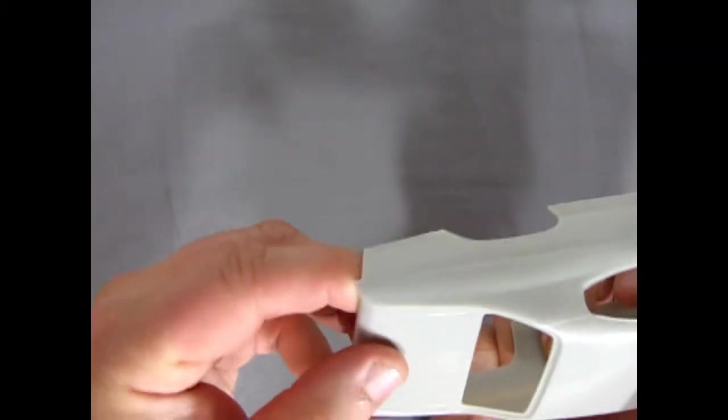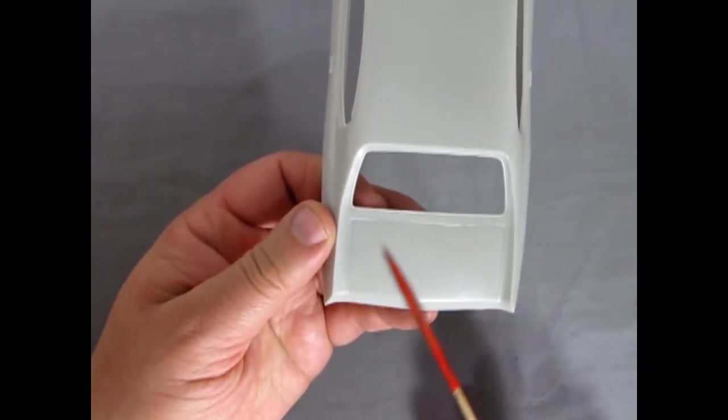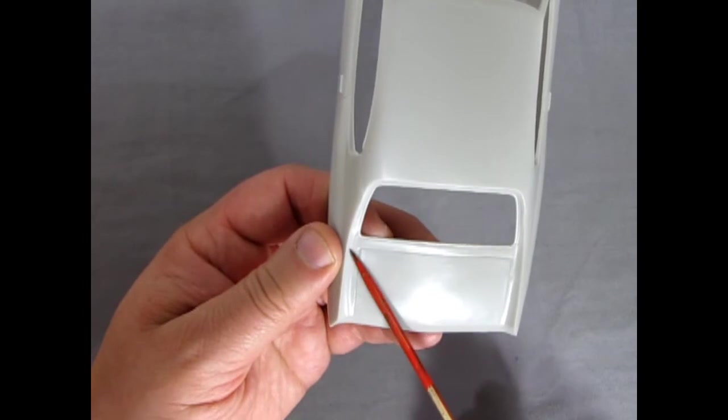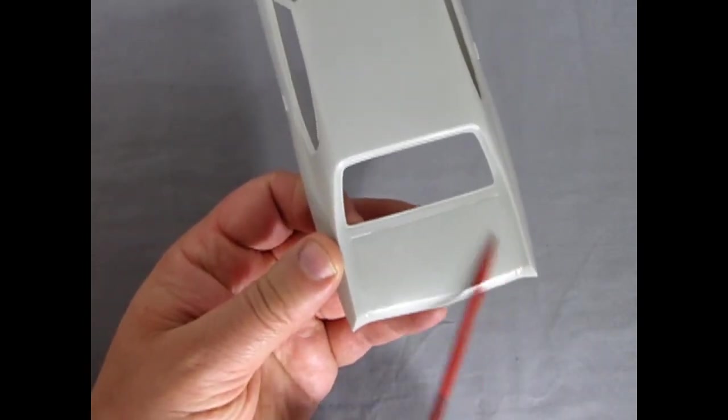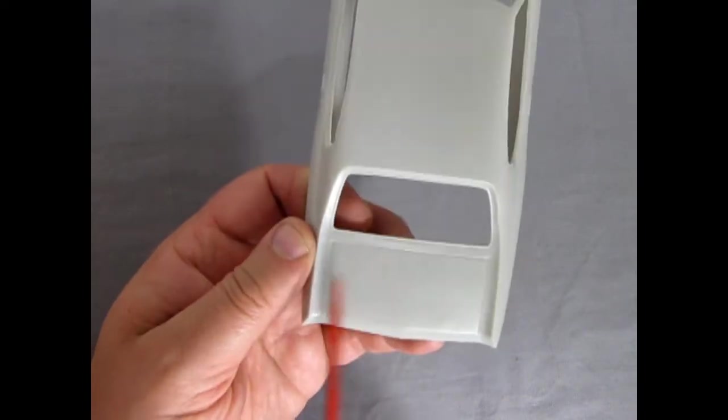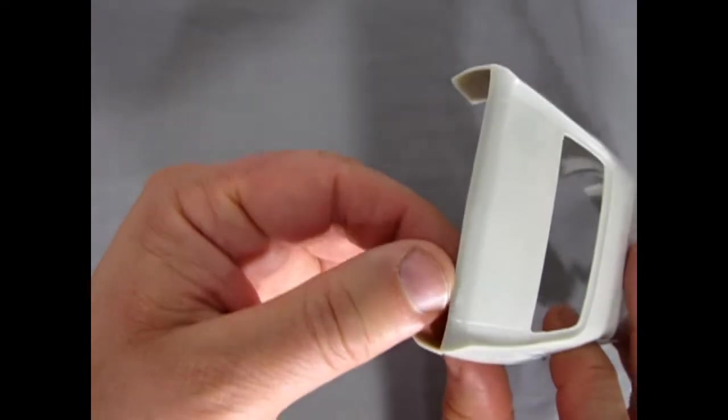The trunk lid does feel a bit lumpy in here. So a bit of cross sanding with your sanding block. Make sure it's on some MDF. Sand across this way. Cross sand this way. And you should start to level the trunk lid out. And then go in with your finer sandpapers.